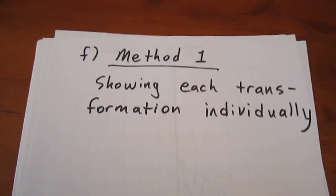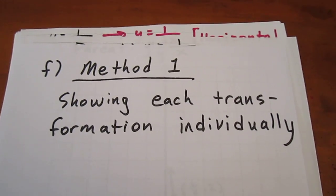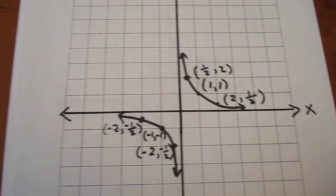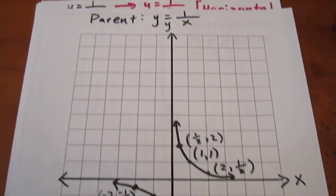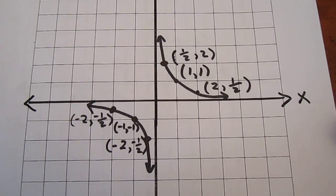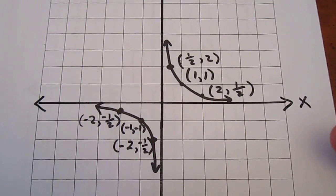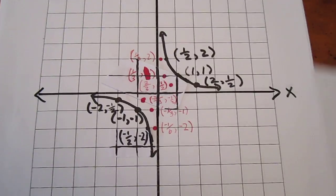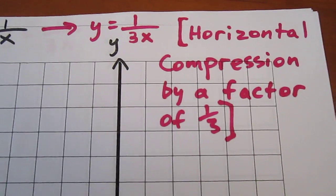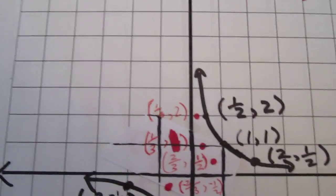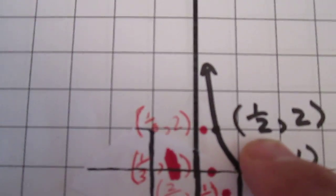Let's try graphing. The first method we can use is to show each transformation individually. We'll begin by starting with our parent curve, y equals 1 over x, to get a basic idea of what our curve should look like. Next, we show what happens with a horizontal compression by a factor of 1 third — this is difficult to see, but what we did is multiply each x-coordinate by 1 third.